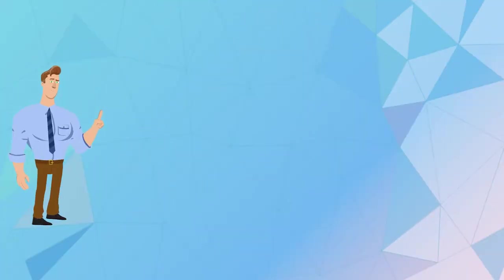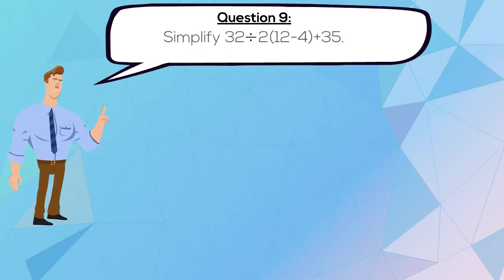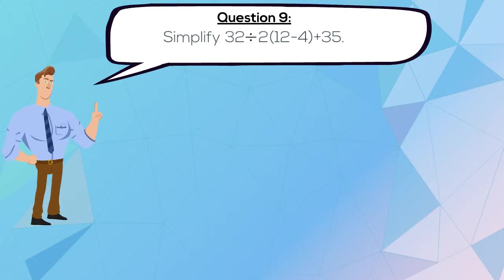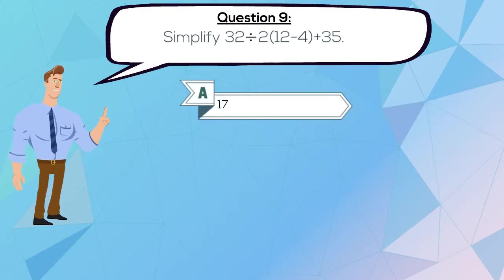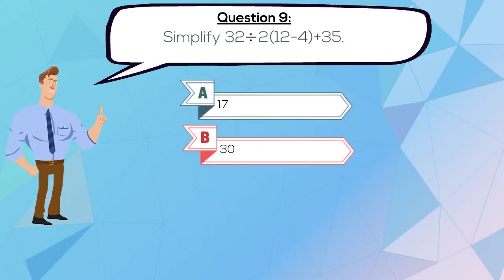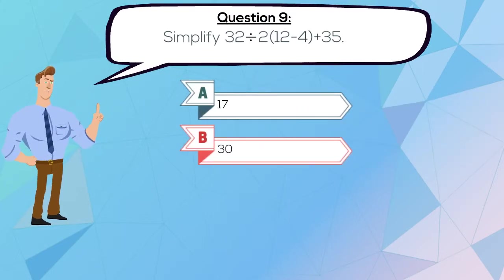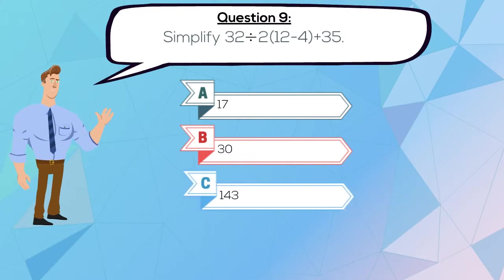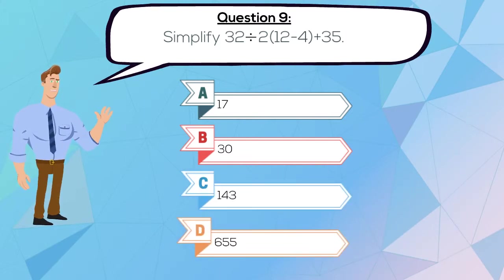Question 9. Simplify this equation. A. 17, B. 30, C. 143, or D. 655.